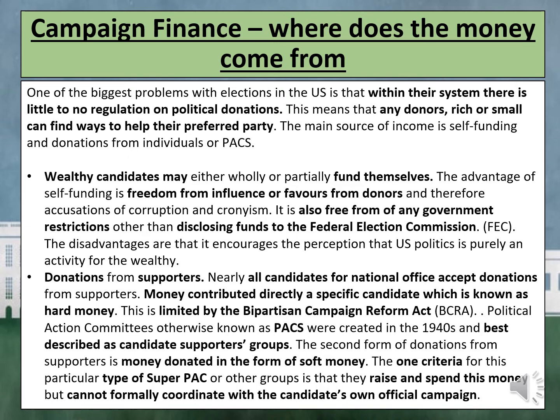Many established politicians also form leadership PACs as a way of raising money to help fund other candidates' campaigns. The second form of donations from supporters is soft money, also known as independent expenditure — money spent indirectly to promote candidates or to attack opponents. The one criterion for super PACs or other groups is that they raise and spend this money but cannot formally coordinate it with the candidate's own official campaign. As a result, all major candidates have large wealthy super PACs behind them, such as Future Forward USA, which backed Joe Biden in 2020, or the pro-Trump super PAC called Preserve America PAC.